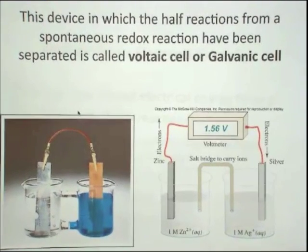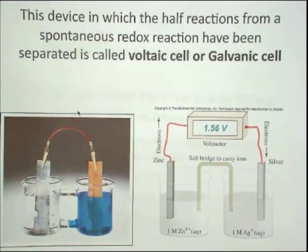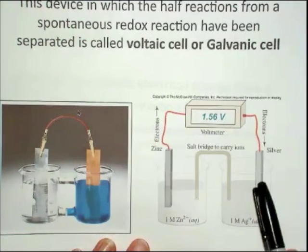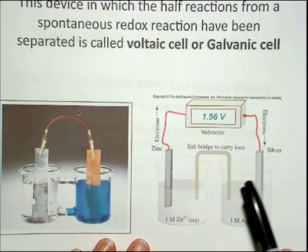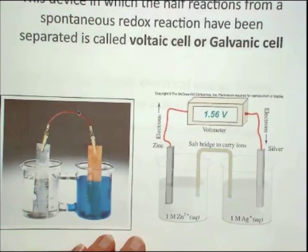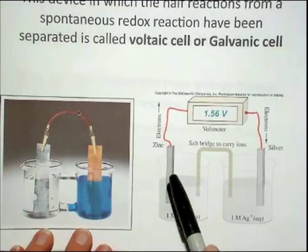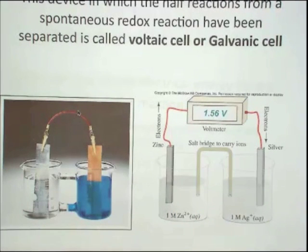And so the half-reactions that are separated are spontaneous, and we can have separated them, then the electrons through the external wire to get from one reactant to the other reactant. So in that first picture I showed you, the two reactants were mixed together in one beaker. In this case, in order to harvest the movement of electrons, you have to separate the two reactants.